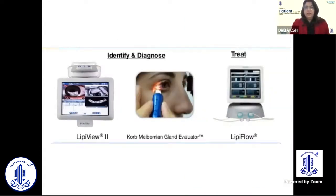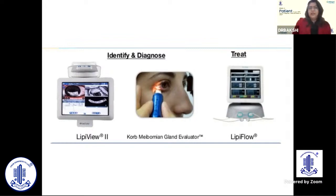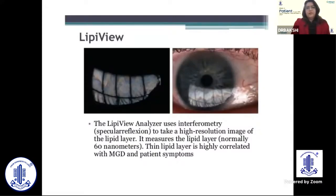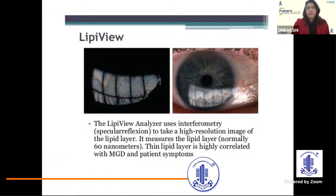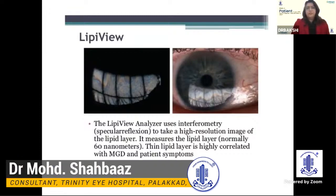The latest diagnostic tool we have to examine the meibomian glands is the LipiView system, which allows detailed study of the meibomian glands. We can also evaluate lipid layer thickness and blink rate. It uses interferometry or specular reflection to capture high-resolution images of the lipid layer. The normal lipid layer thickness is 60 nanometers, and a thin lipid layer is highly correlated with MGD patient symptoms.